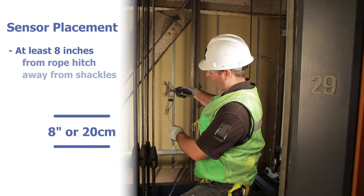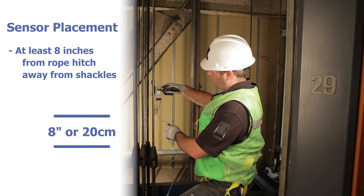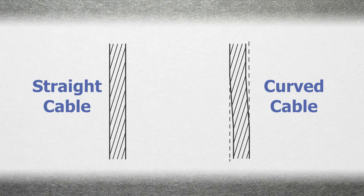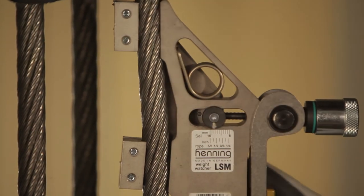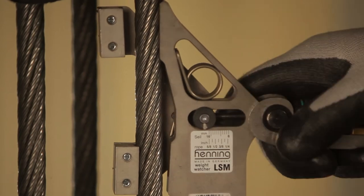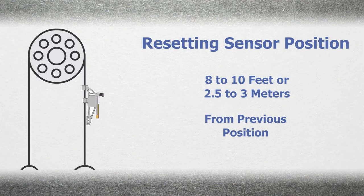Set the sensors at least eight inches from the rope hitch point away from the shackles. Be sure that the sensors are not attached in a section of rope that has any curvature associated with the shackle. Any curvature in the rope can affect measurements. This includes curvature caused by setting the sensor. If a sensor is released for any reason, it must be reset in a different position, eight to ten feet from the previous position.